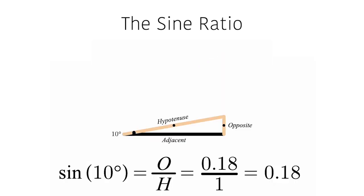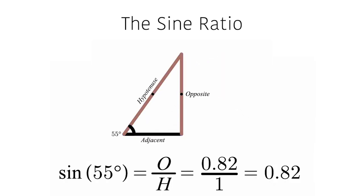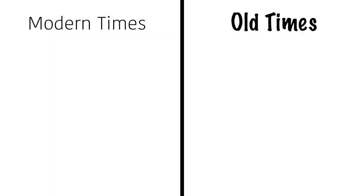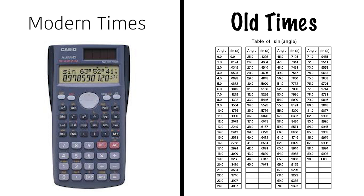With this, he constructed a table measuring each ratio of each degree. In modern times, you can simply press the sine function in your calculator and input your angle, rather than referring to a lengthy table of angles and ratios.